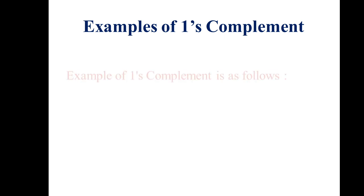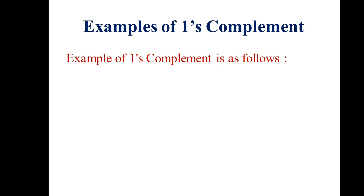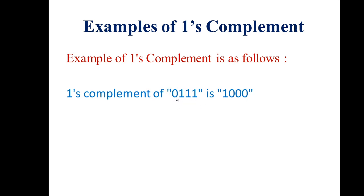Let's take an example. If you have the binary number 0111 and you want to find its 1's complement, you toggle each bit: 0 becomes 1, then 1 becomes 0, the next 1 becomes 0, and the last 1 becomes 0. So the 1's complement of 0111 is 1000.